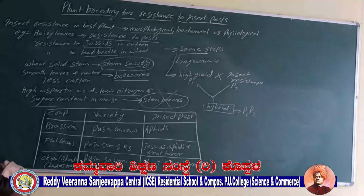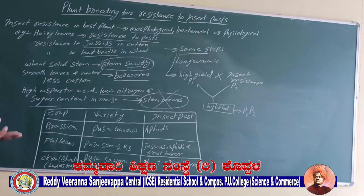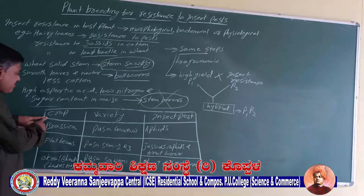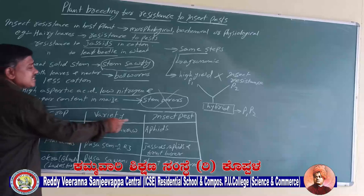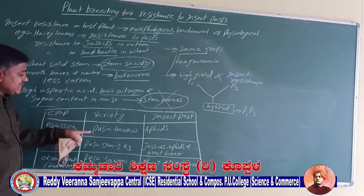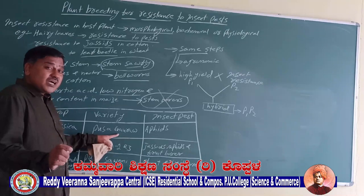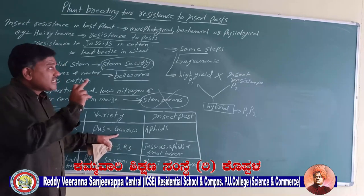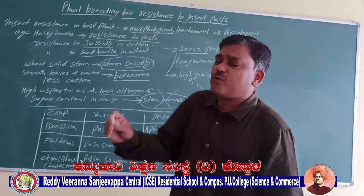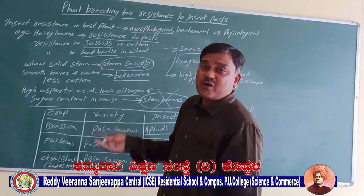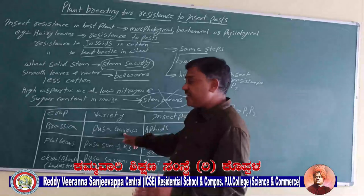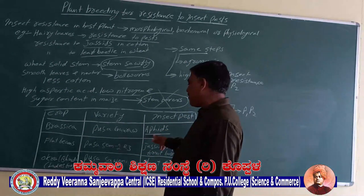What are the crop varieties that have been made resistant from sensitive? For example, in Brassica, the variety Pusa Gaurav has been made resistant to an insect called jassids. Earlier, jassids used to cause high crop loss, but Pusa Gaurav has been made resistant against jassids.